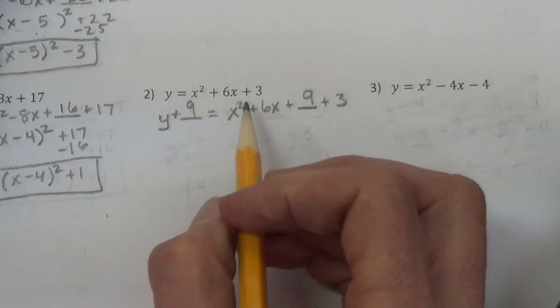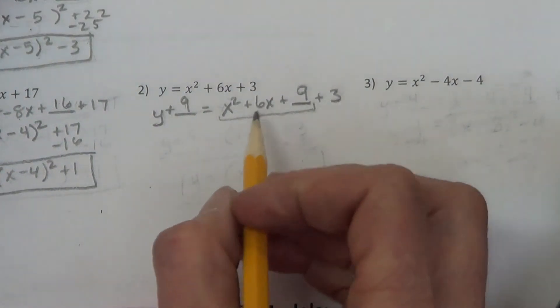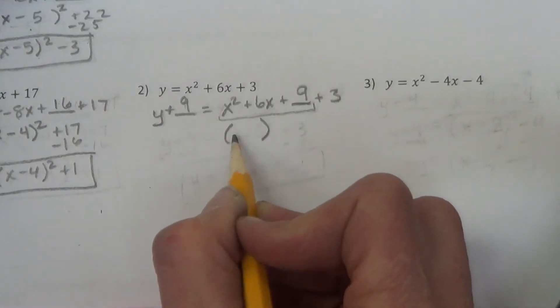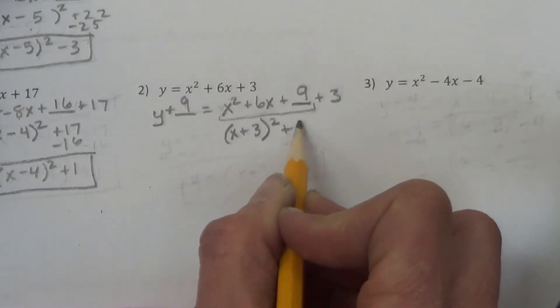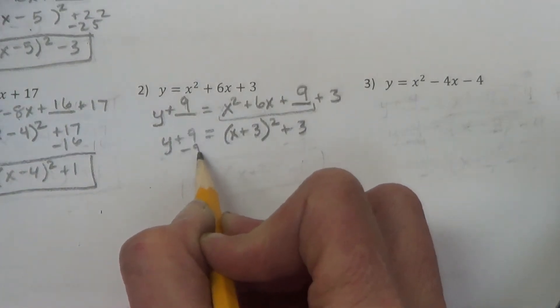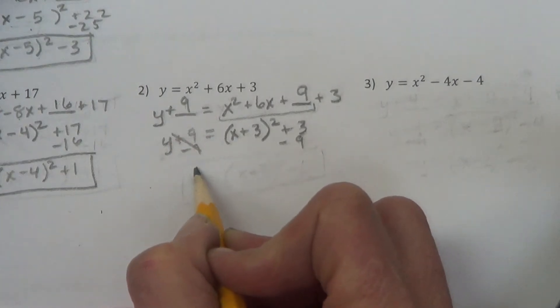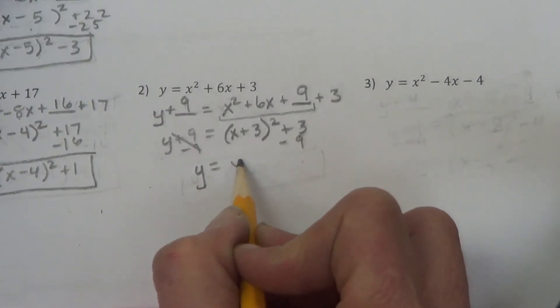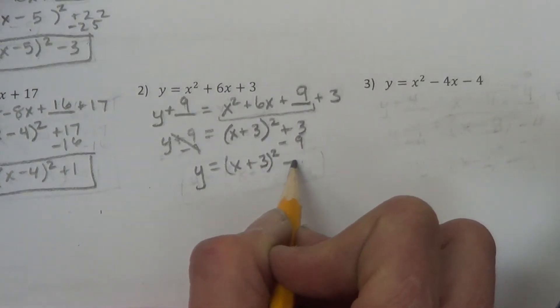So we add 9 to each side. Now the factor form of that perfect trinomial would be x plus 3 squared. We still have a plus 3 out there. Y plus 9. Subtract 9 from each side to get rid of the 9 by the y. So we have y alone, x plus 3 squared, and then 3 minus 9 is negative 6.